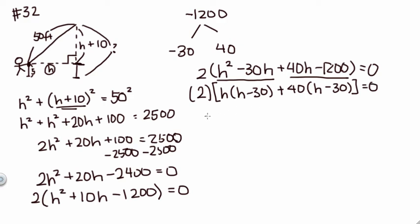So if I factor that out, I get (H minus 30) times (H plus 40) is equal to 0. My two possible solutions are when this part is equal to 0. So if H minus 30 equals 0, that means H is 30. Or when H plus 40 is equal to 0, that means H is negative 40.